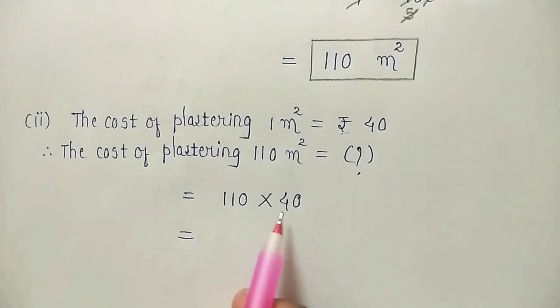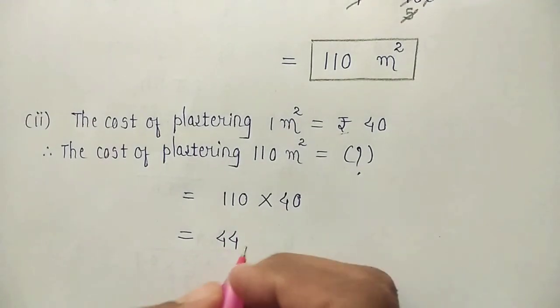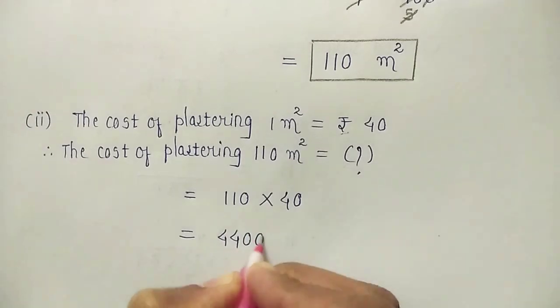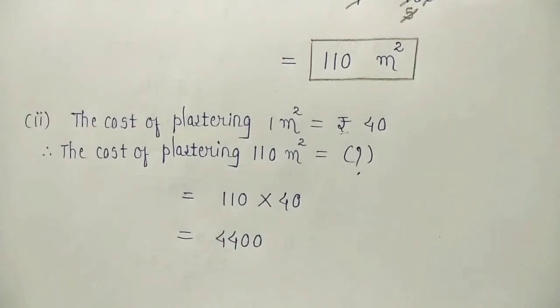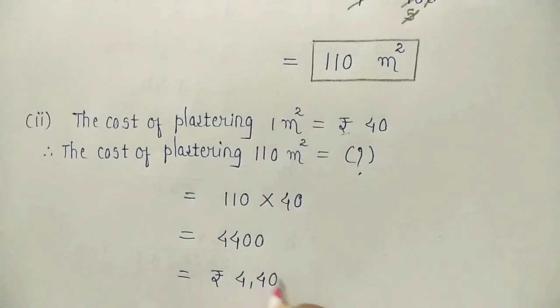Now, here we have 11 into 4, that is 44. Two zeros we have, right? So that will also be multiplied. This is cost, which means unit will be rupees 4400.